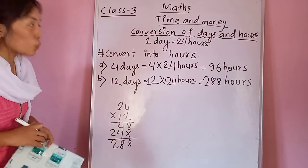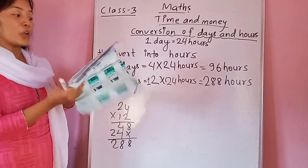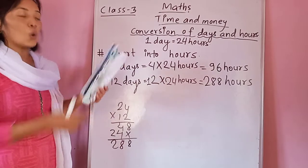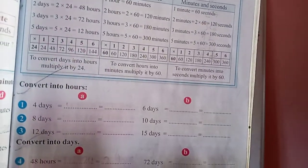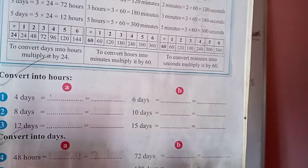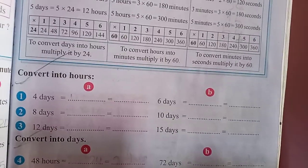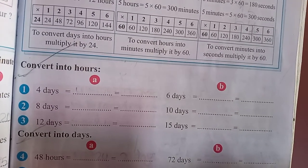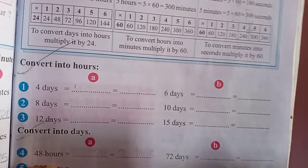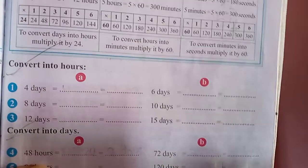I hope you have understood. There are lots of questions in your book that you have to solve as homework in your copy. I hope you will complete it. Questions one-a and three I have already done; you have to do one-b, two-a, two-b, and three-b on your own.